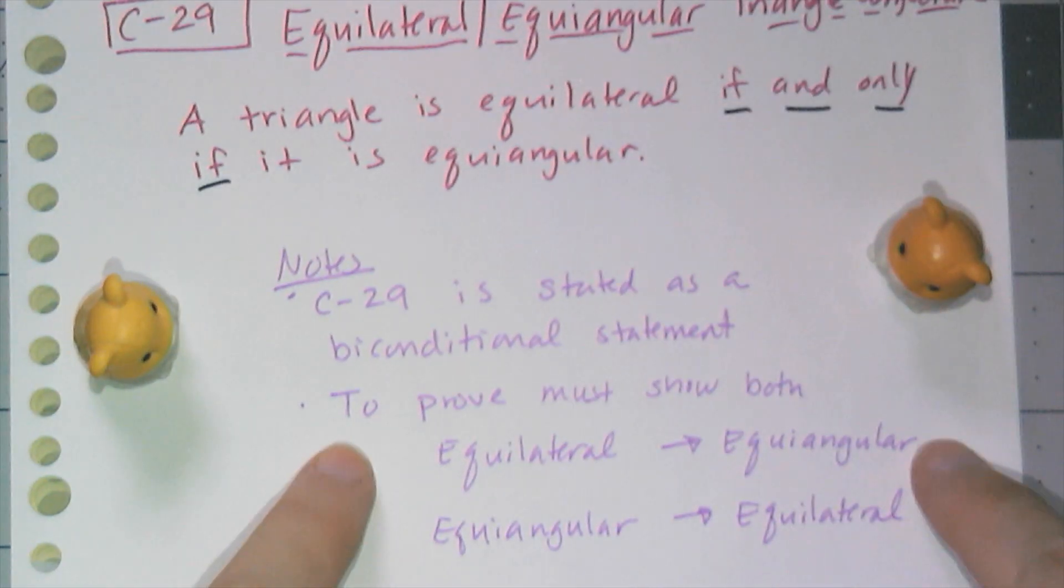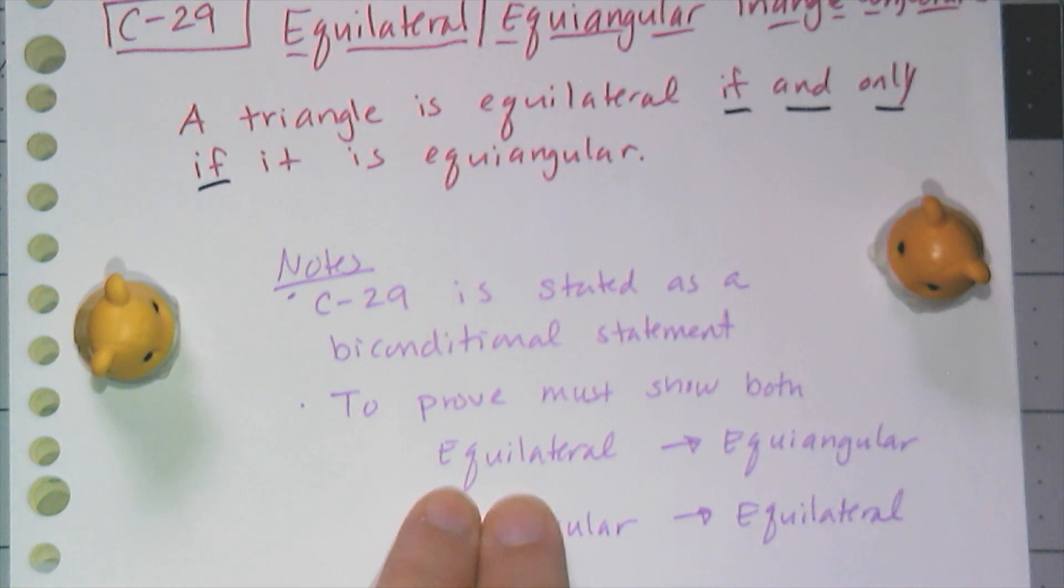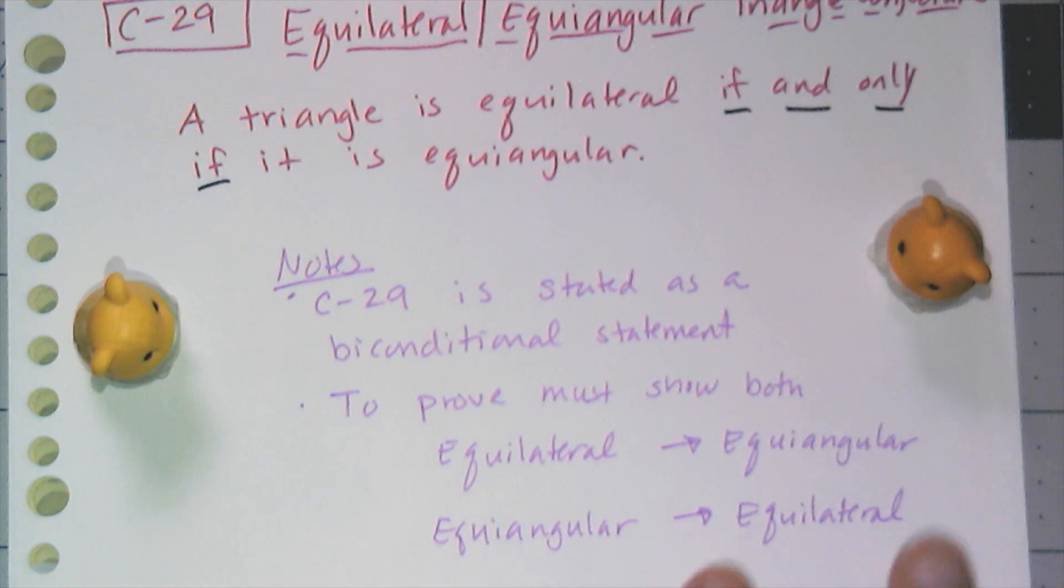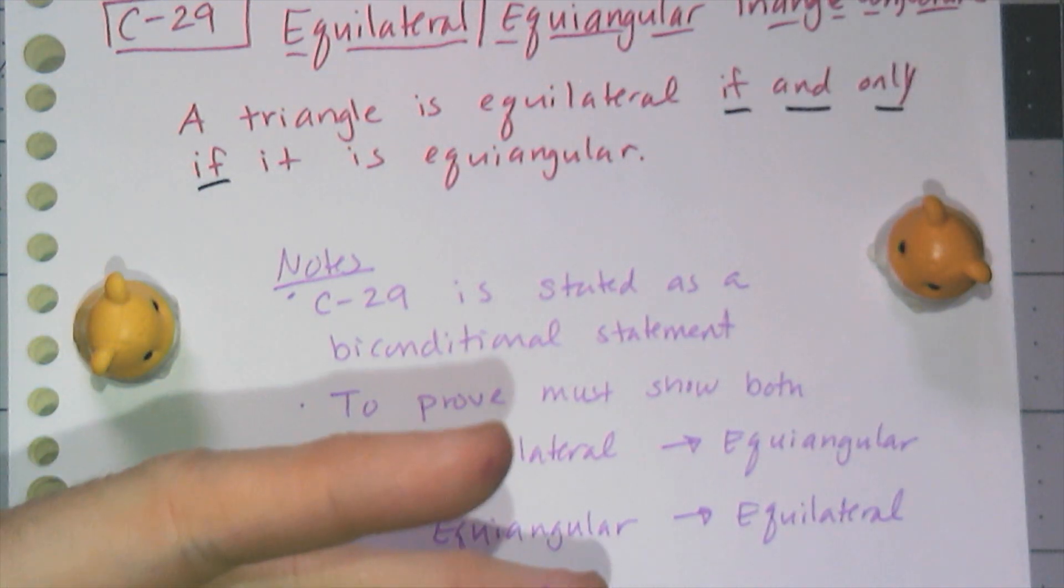And so when I have to prove a biconditional statement, I have to actually show that both directions are true. I have to prove given equilateral, therefore equilangular. And then given equilangular, therefore equilateral. So when we're doing proofs, remember these kinds of statements, you really have to prove two statements.